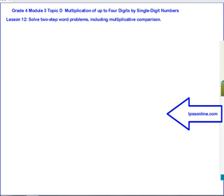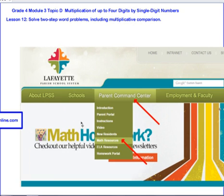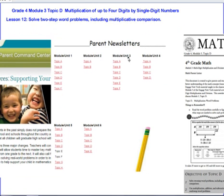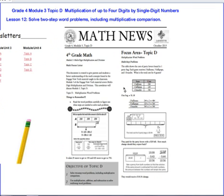That's going to do it for Lesson 12 from Topic D. As usual, you can always get more resources at LPSonline.com. Hover over Parent Command Center, scroll down to Math Resources, click on Grade 4. We're on Module 3, Topic D, so you click there. You can get a newsletter that will define vocabulary and help explain some of the math that's in this topic.